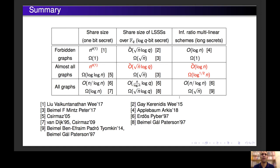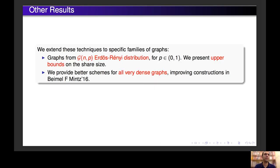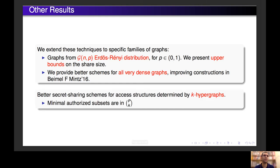This is something we cannot conclude from the other results we got for other efficiency measures. We extended these results for graphs to specific families of graphs, in particular to graphs from the G(n,p) Erdős–Rényi distribution, for which we presented upper bounds on the share size. We also provided better schemes for all very dense graphs, improving previous constructions. We also extended these constructions from graphs to hypergraphs and found better secret sharing schemes for access structures determined by k-uniform hypergraphs, where hyperedges are of size k. These are the results we got in this work.